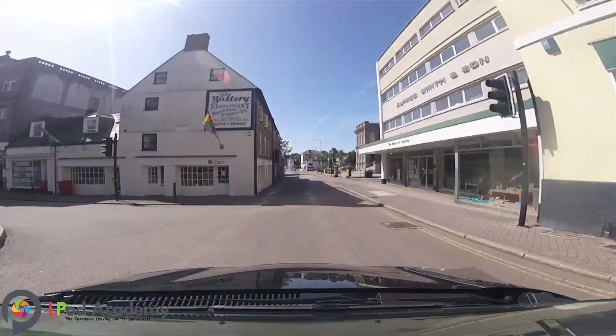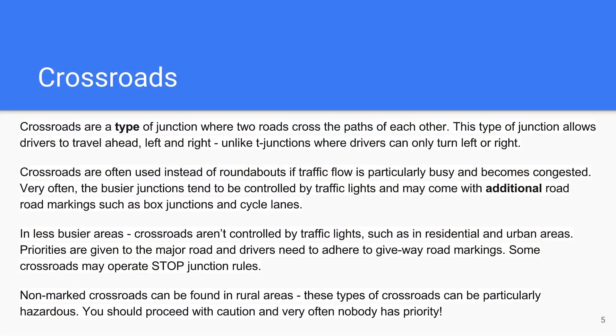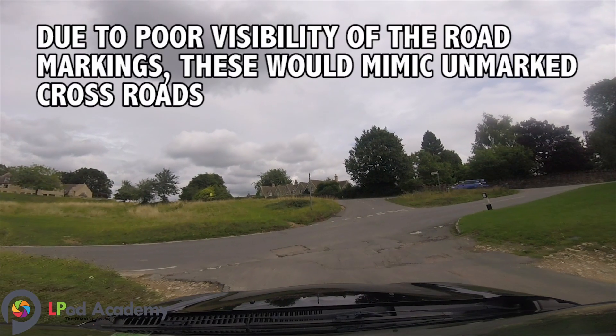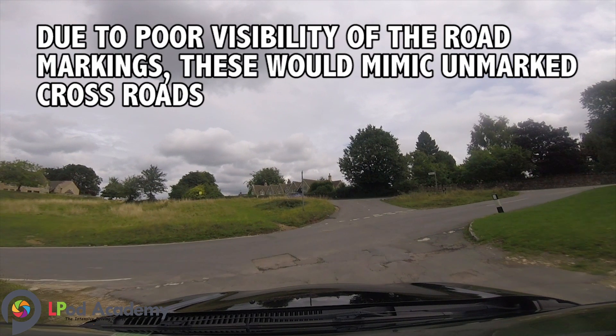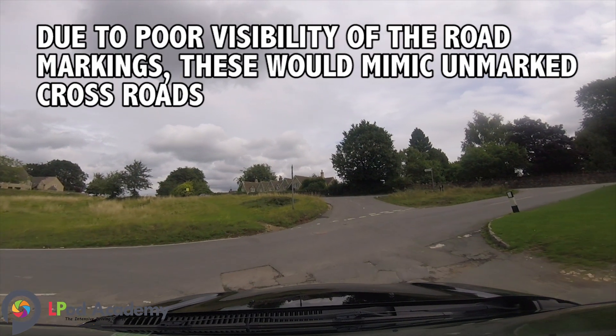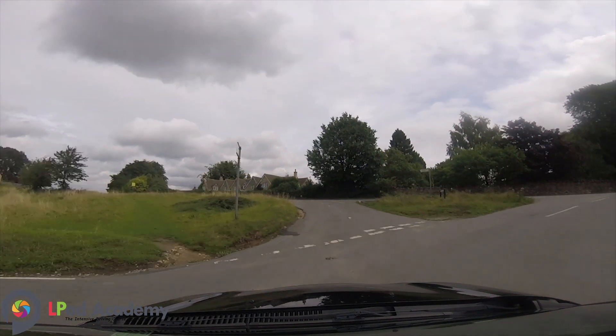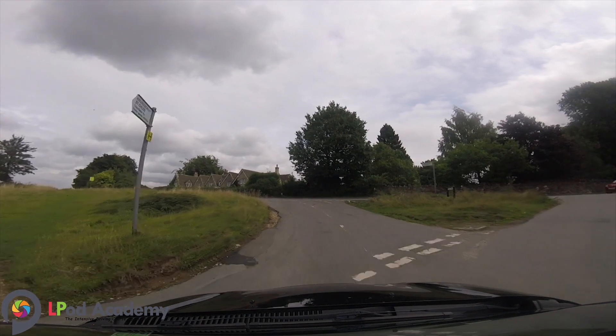Some crossroads may operate stop junction rules. Non-marked crossroads can be found in rural areas — these types of crossroads can be particularly hazardous. You should proceed with caution, and very often nobody has priority.